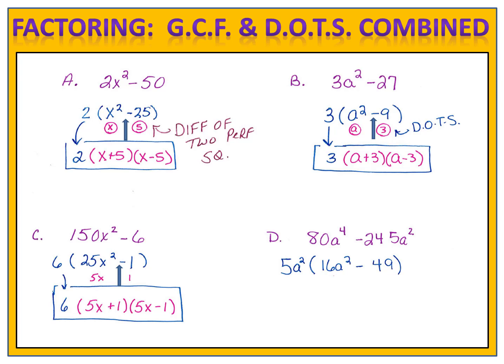Instantly, we notice that there is a difference of perfect squares. 16a squared minus 49. We can factor that binomial into the two binomials, 4a plus 7 times 4a minus 7. Don't forget to bring down the common factor, 5a squared, and now we have factored completely.